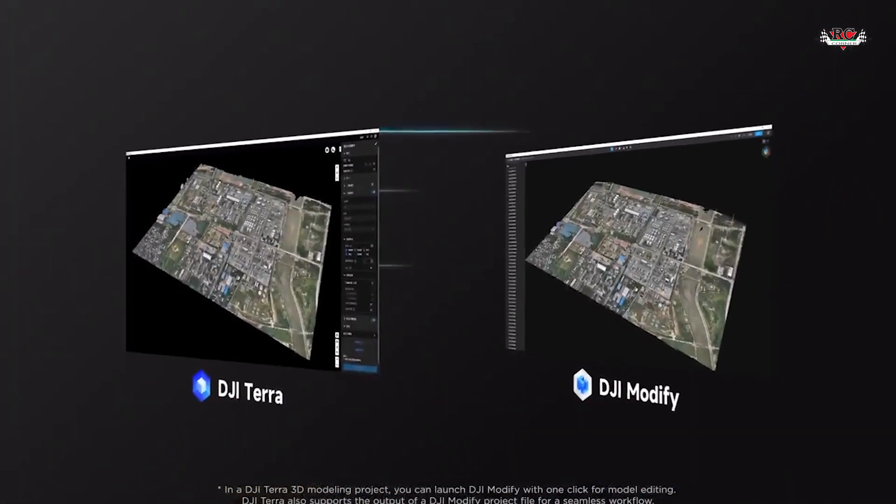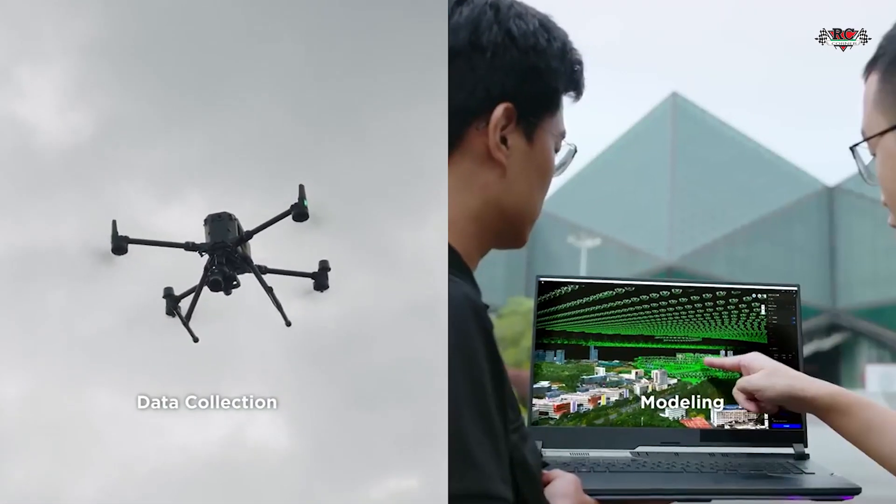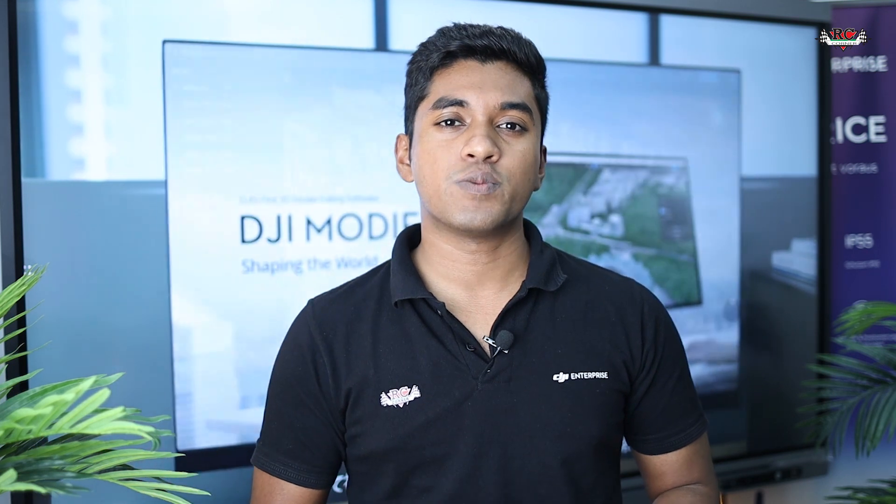In DJI Modify, you can import 3D models directly from DJI Terra, which makes it easier to use when you are using DJI products in your surveying ecosystem. This will make things very simple since we can directly import from DJI Terra, repair it within DJI Modify, and after repairing you can simply upload it to DJI Cloud and send a link to your customer to view the outputs.